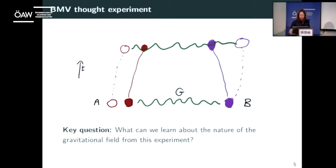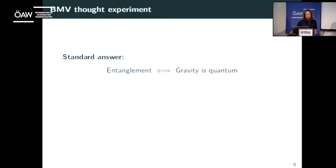The standard answer is that if we see entanglement in the experiment, this is good evidence that the gravitational field has to be quantum in some sense. And if we do not see entanglement, then this means the gravitational field is classical. We're going to take this thought experiment, put it into the language of generalized probabilistic theories, and reanalyze this answer — and as I said at the start, things become more complicated when you look at it from this perspective.